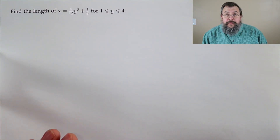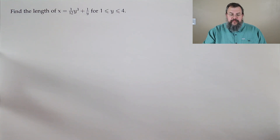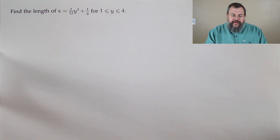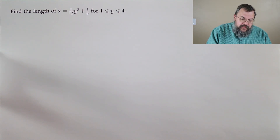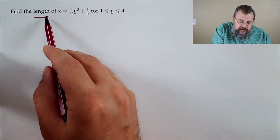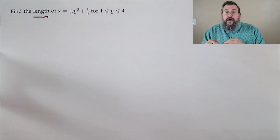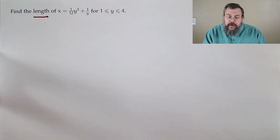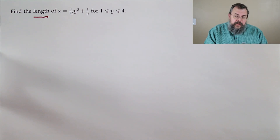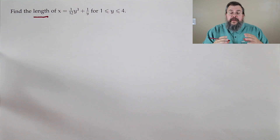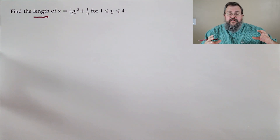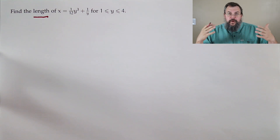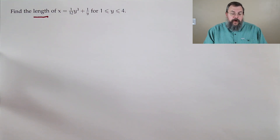Our next problem: find the length of the curve where x equals one-twelfth y cubed plus one over y, for y going from one to four. This has x as a function of y — you don't have to change any process, just change the variable. In our case, our variable will become y.